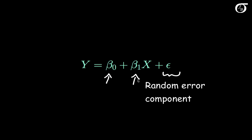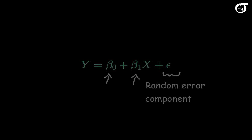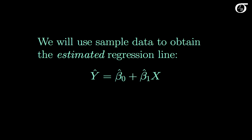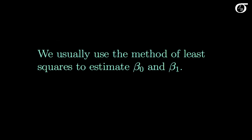β₀ and β₁ are parameters, and they are typically unknown values that we want to estimate. We will use sample data to obtain the estimated regression line. Here β₀-hat and β₁-hat are sample statistics that estimate the parameters β₀ and β₁, and Ŷ represents the predicted value of Y for a given value of X. I don't need an epsilon term here because my predicted values of Y will fall precisely on this line. We usually use the method of least squares to estimate β₀ and β₁, and I look at that in more detail in another video.